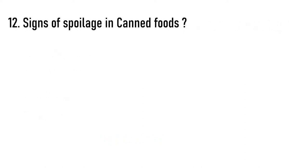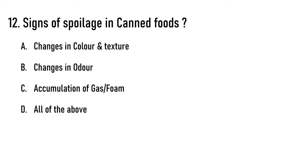Signs of spoilage in canned foods — options are A) changes in color and texture, B) changes in color, C) accumulation of gas or foam, D) all of the above. The correct answer is all of the above.